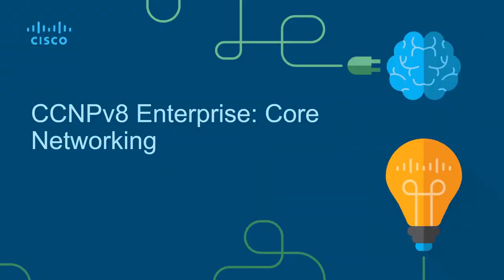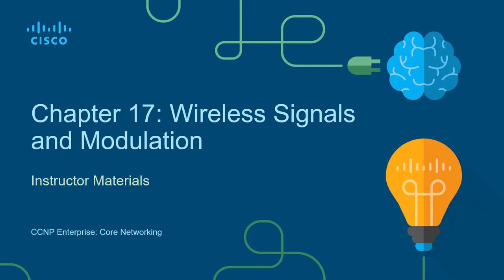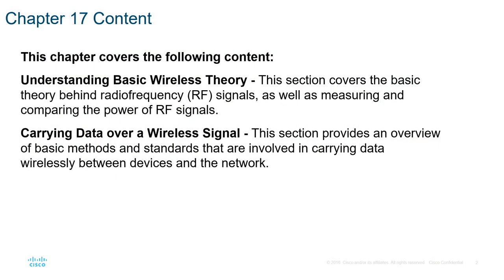Welcome. In this video we are looking at the CCNP version 8 curriculum Enterprise, focusing on core networking. This is going to be the first of two video series, focusing on ENCOR core. Chapter 17: Wireless Signals and Modulation. We are going to be focusing on basic wireless theory, things like understanding radio frequency signals, measuring and comparing them, as well as carrying data over wireless signals — providing an overview of the basic methods and standards involved.